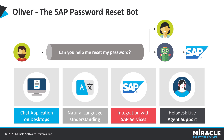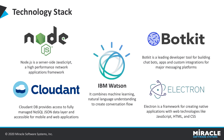One of the chatbots that we built that resembles this use case is Oliver. It helps you reset your SAP password and also allows you to escalate your chat to a live agent who might be able to help you better than the chatbot. This chatbot is presented to users on a desktop application and integrates with your SAP services to reset the password. It is built on Node.js, Cloud DB to store your conversations, IBM Watson for natural language processing, BotKit for the bot development framework, and Electron to develop the desktop application.